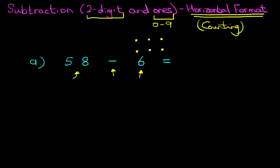Now, what we're going to do is, we're going to start at number 58. And we're going to count backwards. Why are we going to count backwards? Well, we are subtracting. So, 58. Count backwards with me. 58, 57, 56, 55, 54, 53, 52.